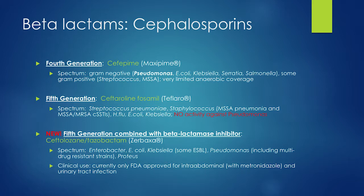With ceftaroline you lose Pseudomonas coverage, and it's still restricted by many formularies. There's also a newer fifth-generation cephalosporin: Zerbaxa or ceftolozane — also fairly restricted but being used more frequently because it's very good against ESBL organisms, which are becoming more common. Drug companies want to make drugs for type 2 diabetes — millions of patients, lots of money — versus the rare patients with extremely resistant infections. There are literally only a handful of new drugs to treat these resistant infections.